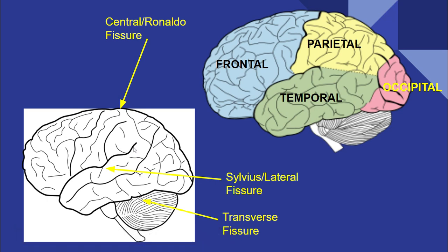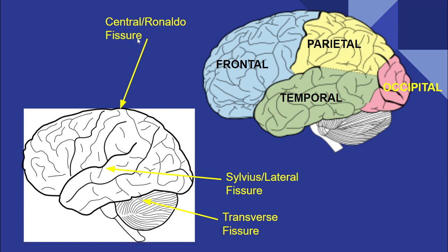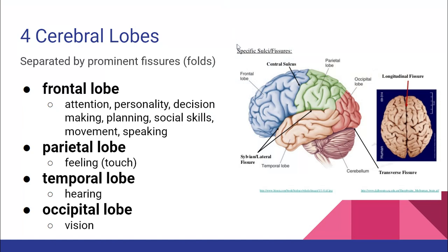The lobes are separated by thicker dark lines called fissures. If you had a brain in an anatomy lab you could actually feel that it's not just one big surface — it's split into different lobes based on those fissures. Both the left and right sides have a frontal, parietal, occipital, and temporal lobe, and you need to know where each one is located.